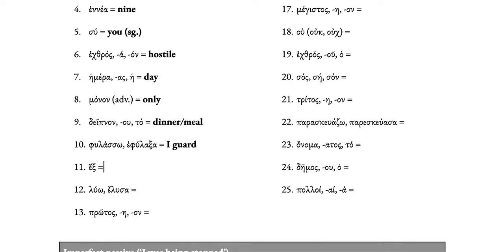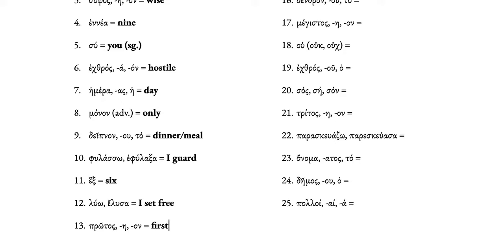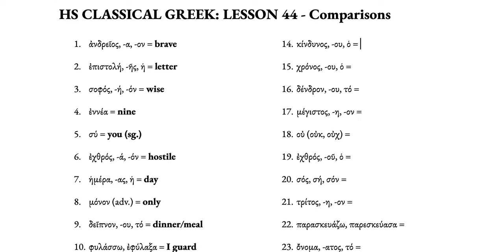Phulasso means I guard. Hex is the number six — remember that's different from ex: ex with smooth breathing means out of and takes genitive, whereas hex with rough breathing is the number six. Luo/elusa means I set free, release, or untie. Protos means first, as in proto-Indo-European. Kindunos is danger, chronos is time as in chronology, dendron is a tree as in rhododendron (literally rose tree), and megistos means very big — it's the superlative form from megas.